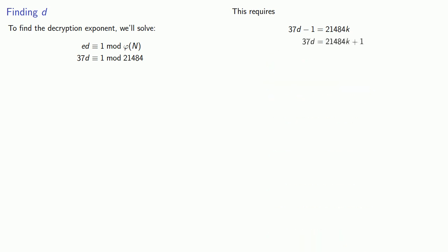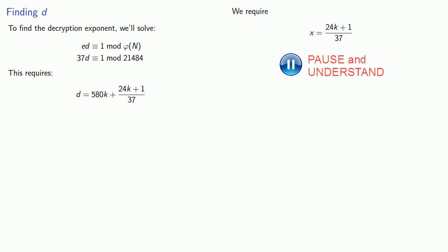Rearranging things, then solving for d gives us our next equation. Now in order for d to be an integer, we require 21484k plus 1 over 37 must also be an integer. So we have that as our next equation. Rearranging things, then solving for k gives us our next equation.